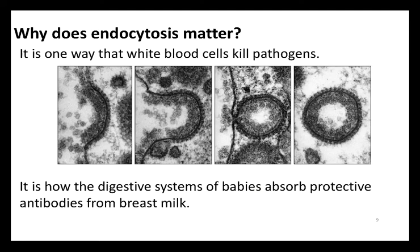Why does endocytosis matter? White blood cells can destroy bacteria by engulfing them through phagocytosis and then fusing with the lysosome, which is full of hydrolytic enzymes. On a friendlier note, it's also how the digestive systems of babies absorb antibodies present in their mom's breast milk — that's pinocytosis, with the antibodies ending up inside a phospholipid bilayer vesicle inside the intestinal cell.